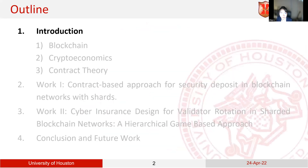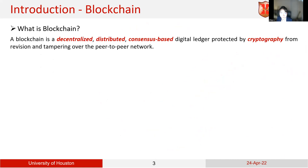Here is the outline of today's presentation. The first part is about the introduction of blockchain basics. I would like to introduce the basic concept and definition of the blockchain network. According to IBM, they describe the blockchain network as a decentralized, distributed, consensus-based, digitalized system protected by cryptography from revision and tampering over the P2P network.